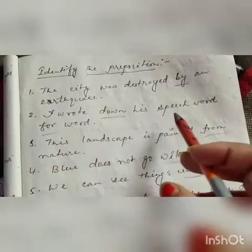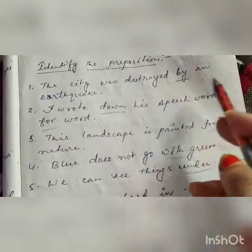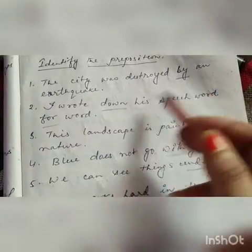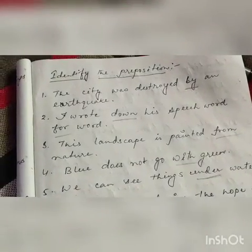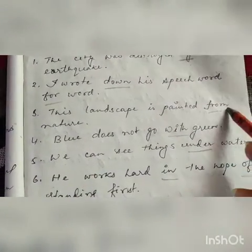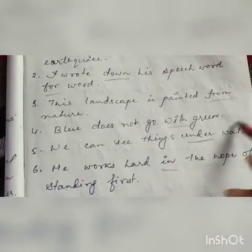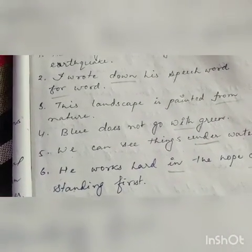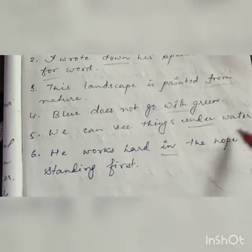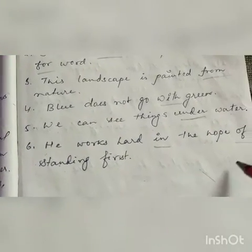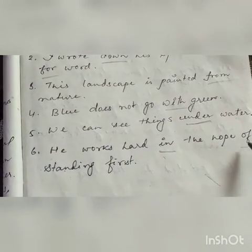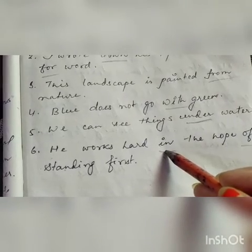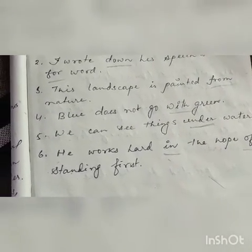Check it down. It was a question on identification of prepositions. 'The city was destroyed by an earthquake' — 'by' is a preposition. 'I wrote down a speech word for word' — 'down' is a preposition, 'for' is also a preposition. 'This landscape is painted from native' — 'from' is the preposition. 'Blue does not go with green' — 'with' is the preposition, already underlined by pencil. 'We can see things underwater' — 'under' is a preposition. 'He works hard in the hope of standing first' — 'in' is a preposition and 'of' is also a preposition.